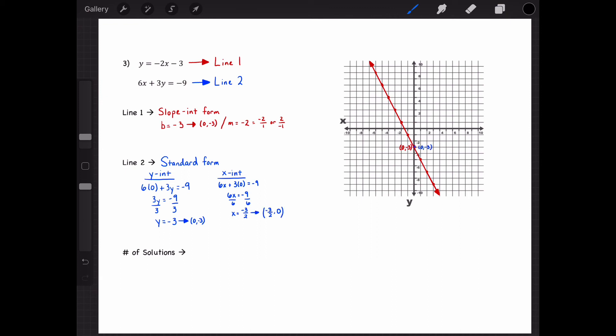From here, I can graph my two ordered pairs and connect them with a line. And as you can see, the two lines overlap one another, meaning that there are infinite solutions.